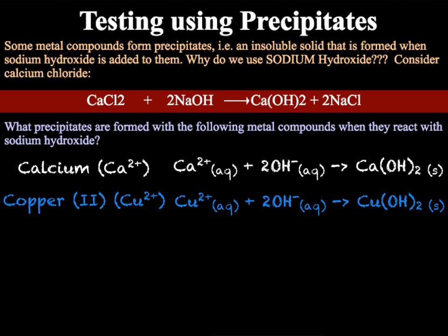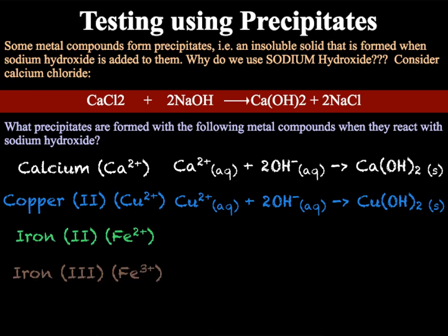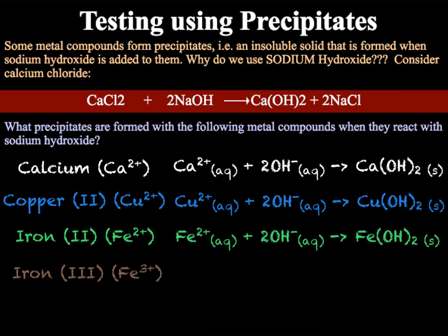Next, we have the two different iron ions: iron 2, which is Fe2+, and iron 3, which is Fe3+. Iron 2 forms green precipitates, whereas iron 3 forms brown precipitates. This means that the ionic equation for iron 2 is the same as the ionic equation for both calcium and copper, with Fe2+ replacing Ca2+.